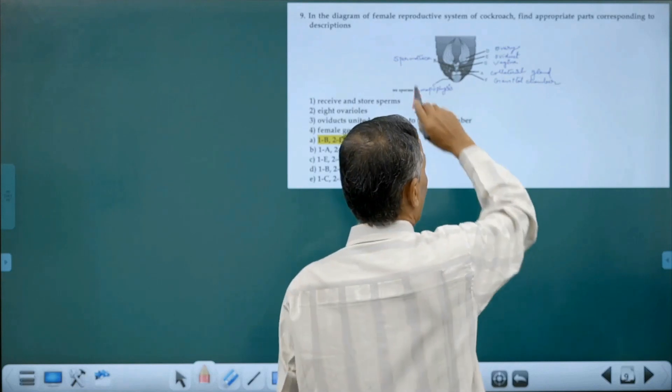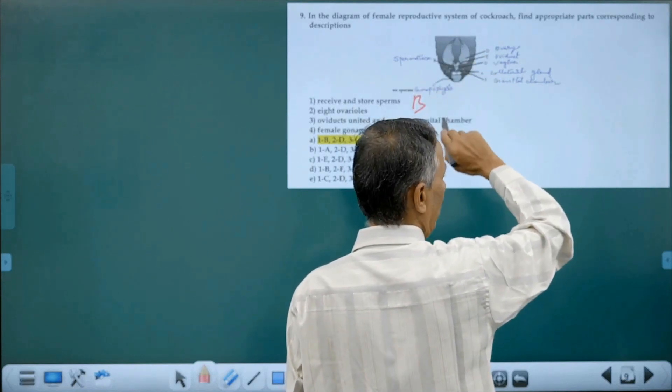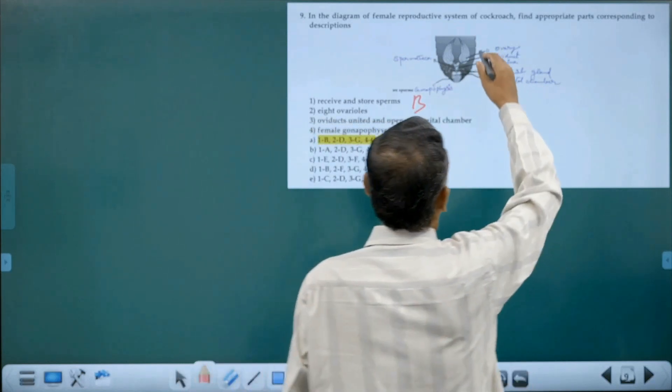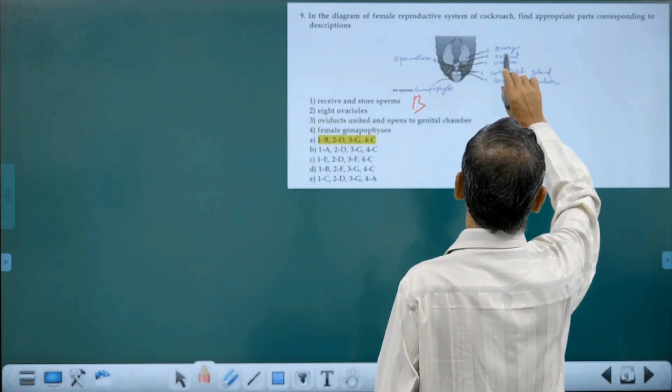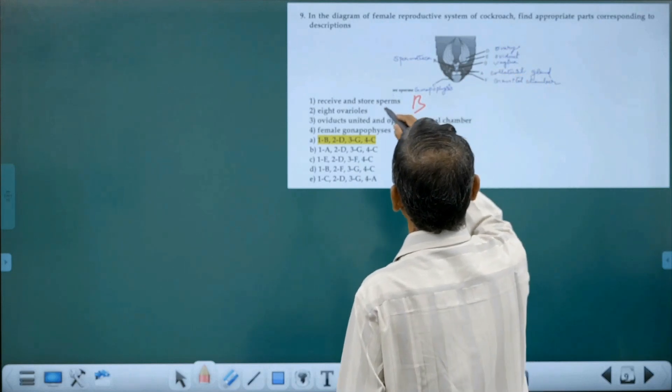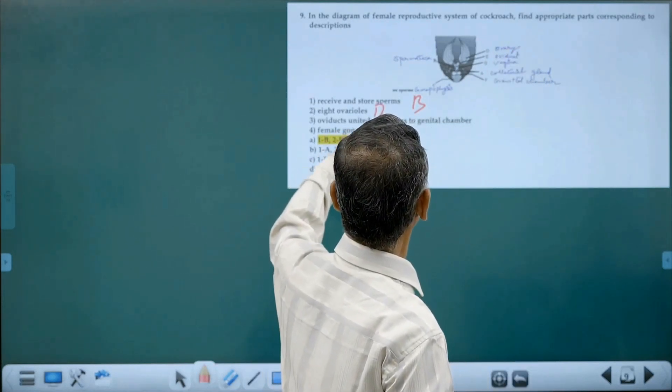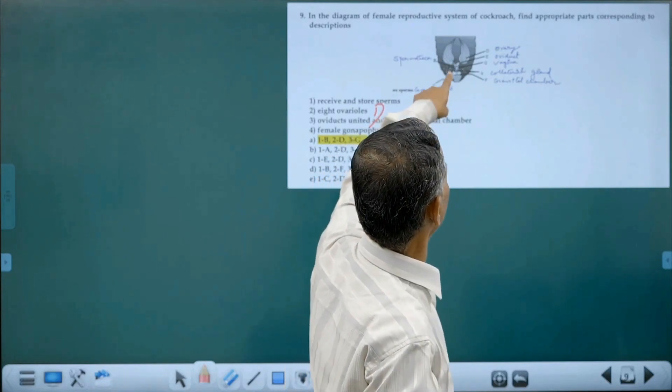Whenever a diagram question is there and parts are marked, you have to identify what are the parts, then only go for the questions. Eight ovaries - ovaries are marked as D.